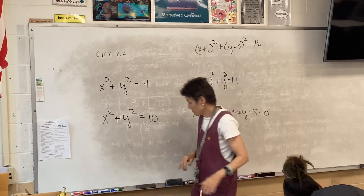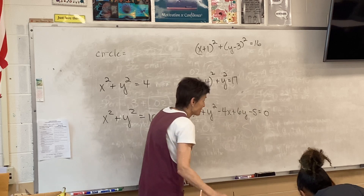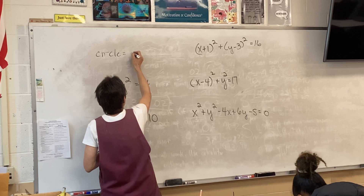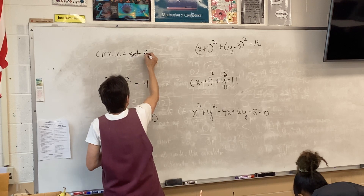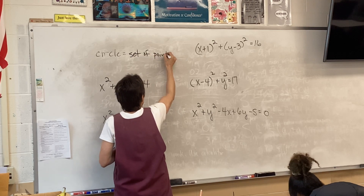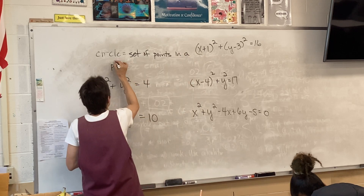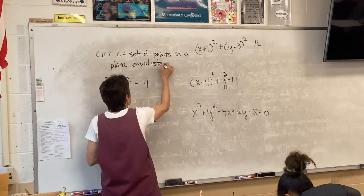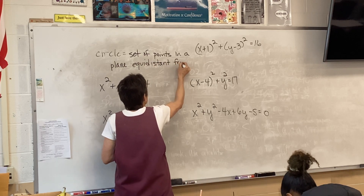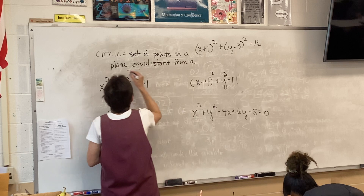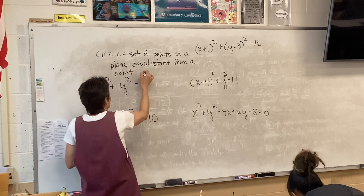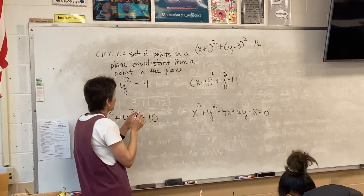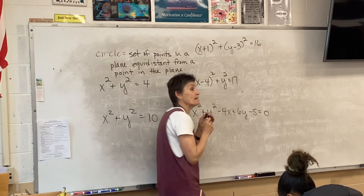We're starting with circles. Step one: we need to define a circle. A circle is a set of points in a plane equidistant from a point in the plane. It's a set of points in a plane — these are all planar figures.